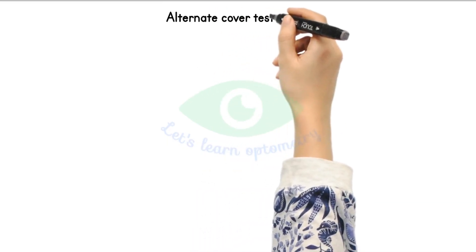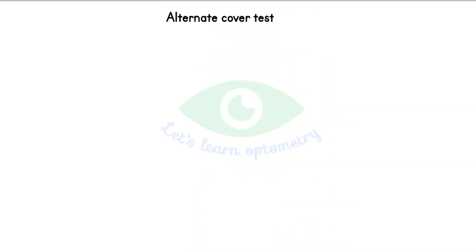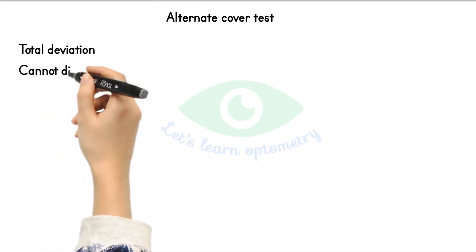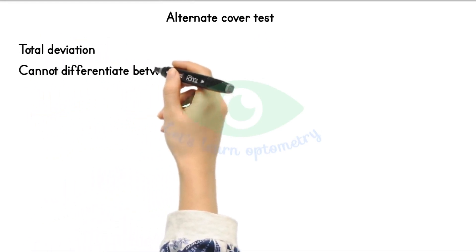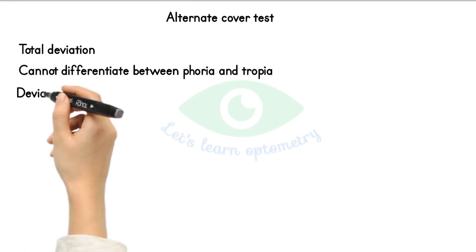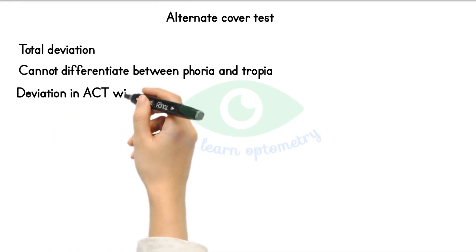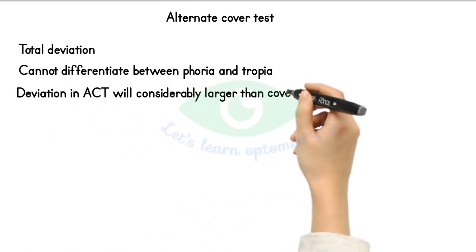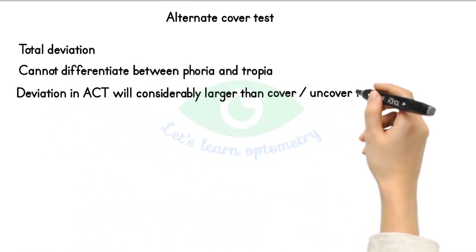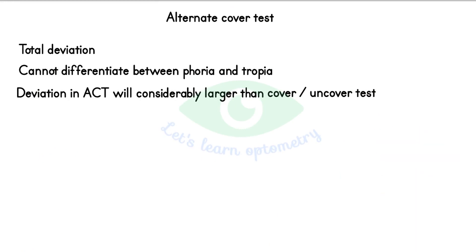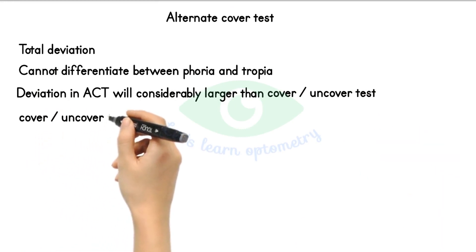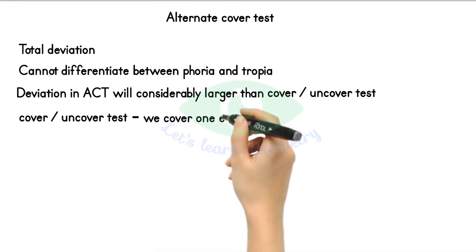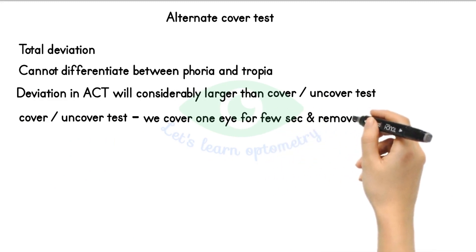Alternate cover test: the alternate cover test discovers the total deviation. It cannot differentiate between a phoria and a tropia. The deviation seen in the alternate cover test will considerably be larger than in the cover-uncover test, because in the cover-uncover test we cover one eye for a few seconds and then remove the cover.